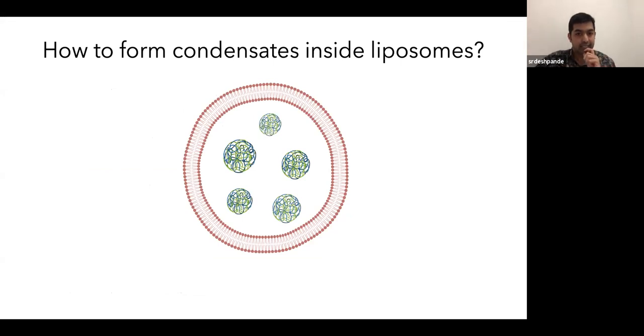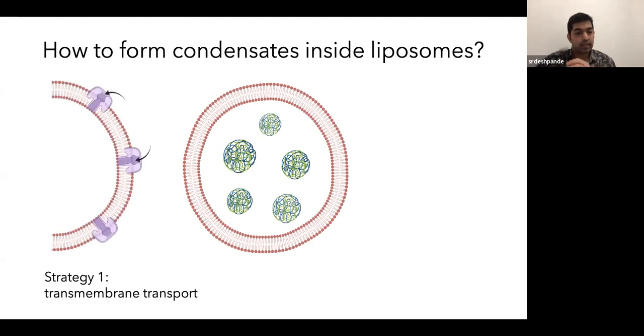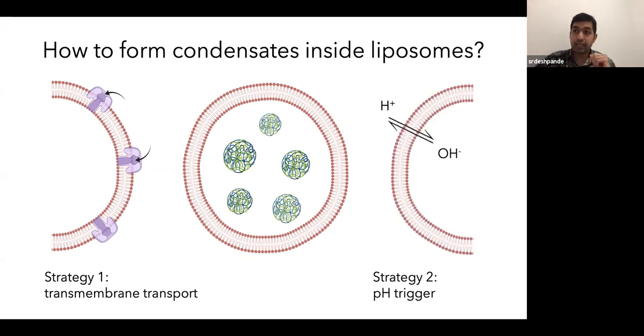And indeed, we did that using two different strategies, and this is what I will show you now. The first strategy was using transmembrane transport. So indeed using the alpha-hemolysin pores to bring about transport of small molecules inside. And the other strategy was using actually just the natural permeability of membranes to bring about a pH-triggered condensation. So let's start with the first strategy.